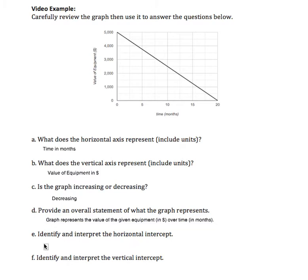Identify and interpret the horizontal intercept. Let's see where the graph crosses the horizontal axis. That is at this ordered pair right here, which is 20 comma 0. So the 20 represents time.